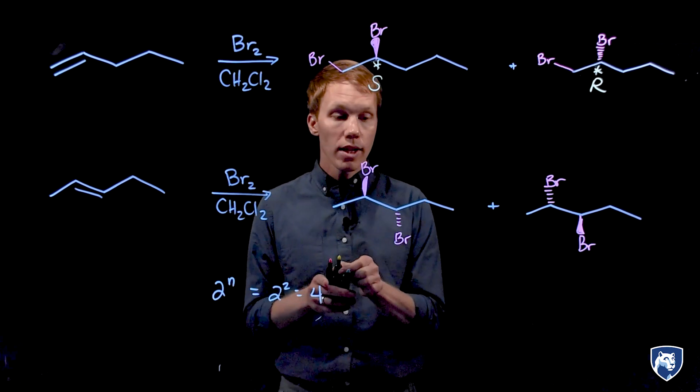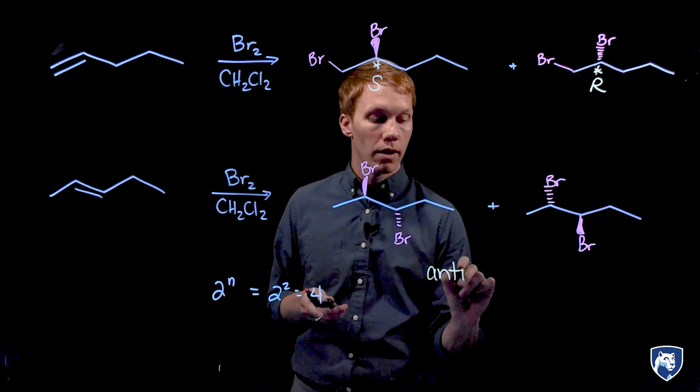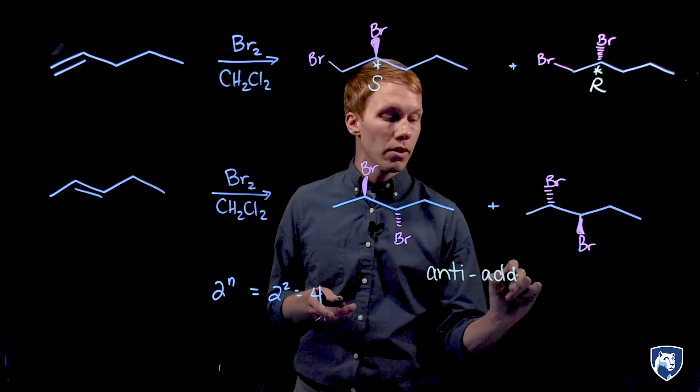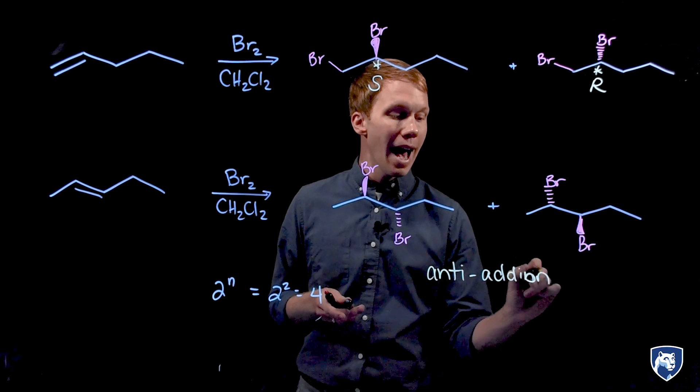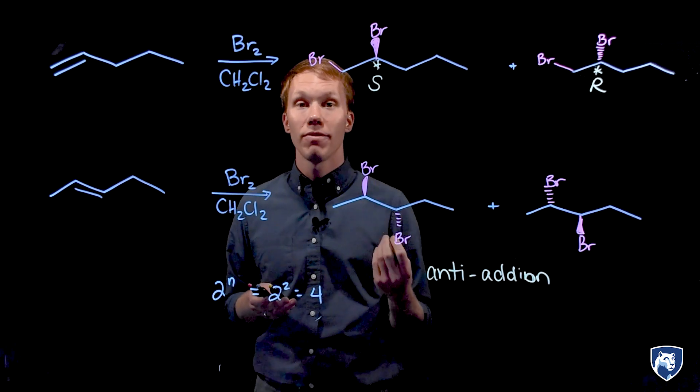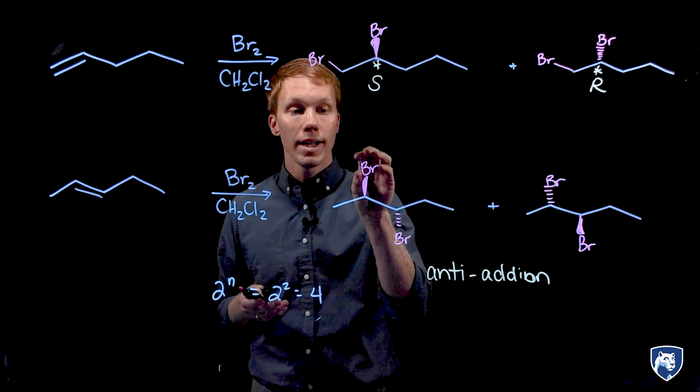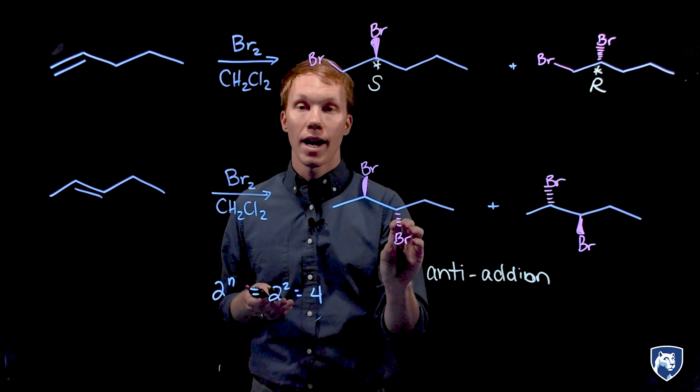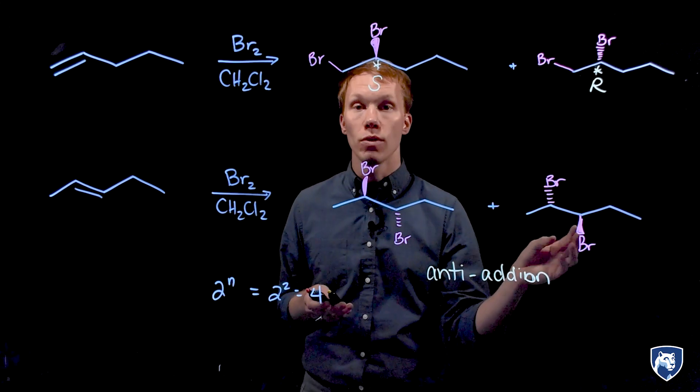So it is stereoselective when there are two chiral centers produced. This reaction is described as an anti-addition because the two groups have added to opposite faces of the alkene. The one has added to the front face and the other has added to the back face. And that can happen two different ways.